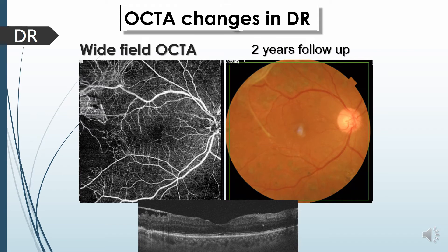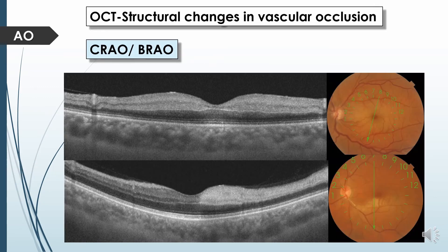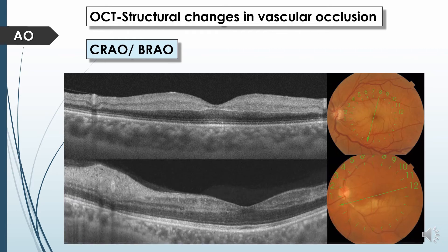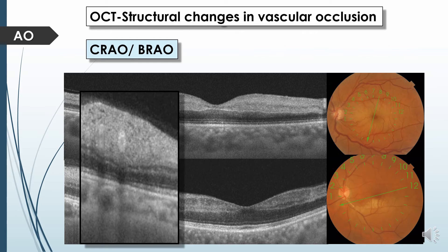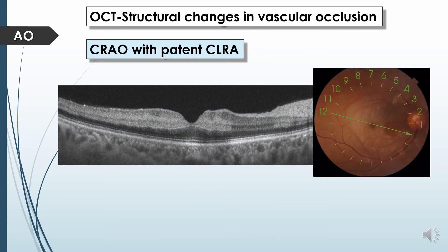Regarding retinal vascular occlusion: in retinal artery occlusion there is retinal whitening caused by ischemic infarction of the affected part of the retina. In B-scan OCT there is hyperreflectivity of the inner layers compared to the outer retinal layer. In some selected cases we can detect the fibrin thrombus plaque within the cavity of the retinal vessel. In a patient with central retinal artery occlusion with patent cilioretinal artery, B-scan OCT shows a discrepancy between the normal inner retina supplied by the cilioretinal artery and the hyperreflectivity of the inner retina of the rest of the macula.